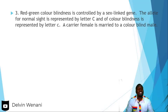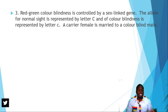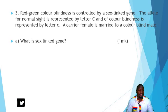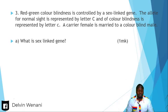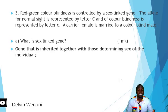Question number 3: red-green colour blindness is controlled by a sex-linked gene. The allele for normal sight is represented by capital C and for colour blindness by small c. A carrier female is married to a colourblind male. First question: what are sex-linked genes? Sex-linked genes are genes which are linked to the chromosomes that determine sex — genes that are inherited together with those determining the sex of the individual.